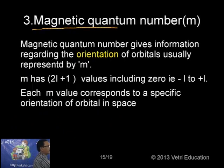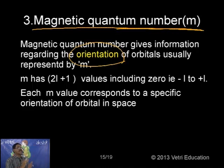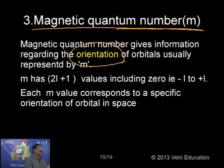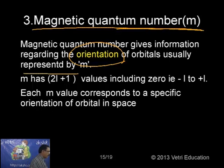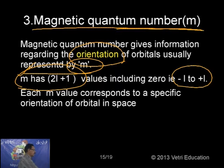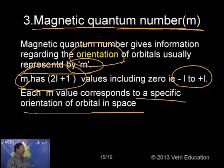The magnetic quantum number, represented by m, gives information regarding the orientation of orbitals. For p orbitals: px is oriented along the x-axis, py along y, and pz along z. The number of m values is 2l+1, ranging from −l to +l including 0. Each m value corresponds to a specific orientation of the orbital in space.